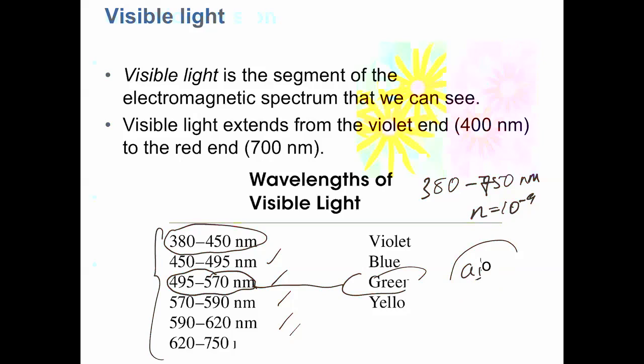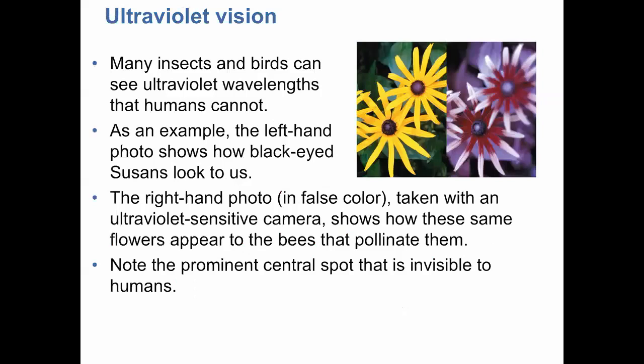Insects and birds can see ultraviolet, but humans cannot. The left-hand photo shows how a black-eyed Susan looks to us, and the right-hand photo, taken with an ultraviolet-sensitive camera as a false color image, shows how the same flowers appear to bees that pollinate them — it looks completely different. There is a prominent central spot that is invisible to humans but bees can see it.